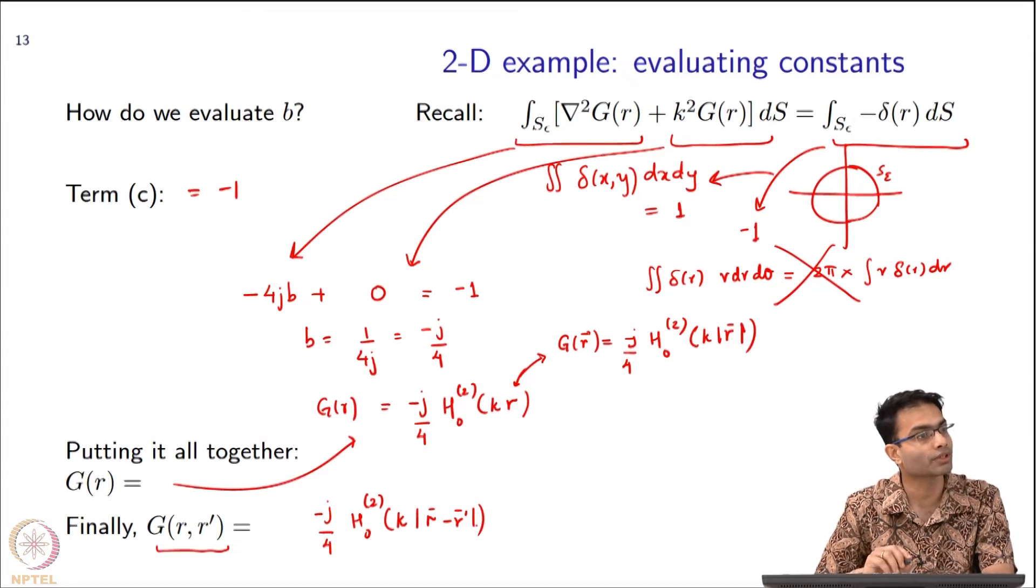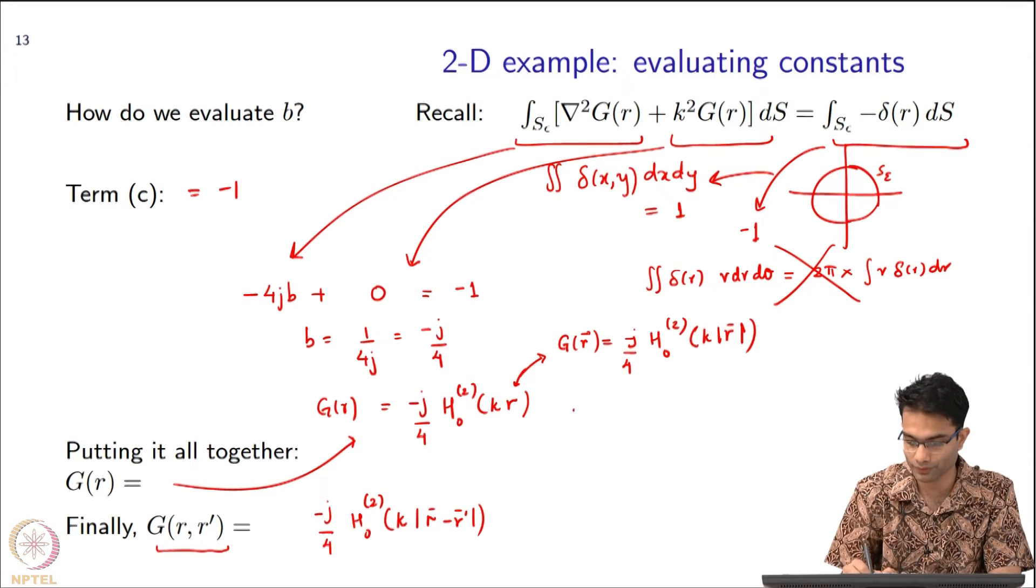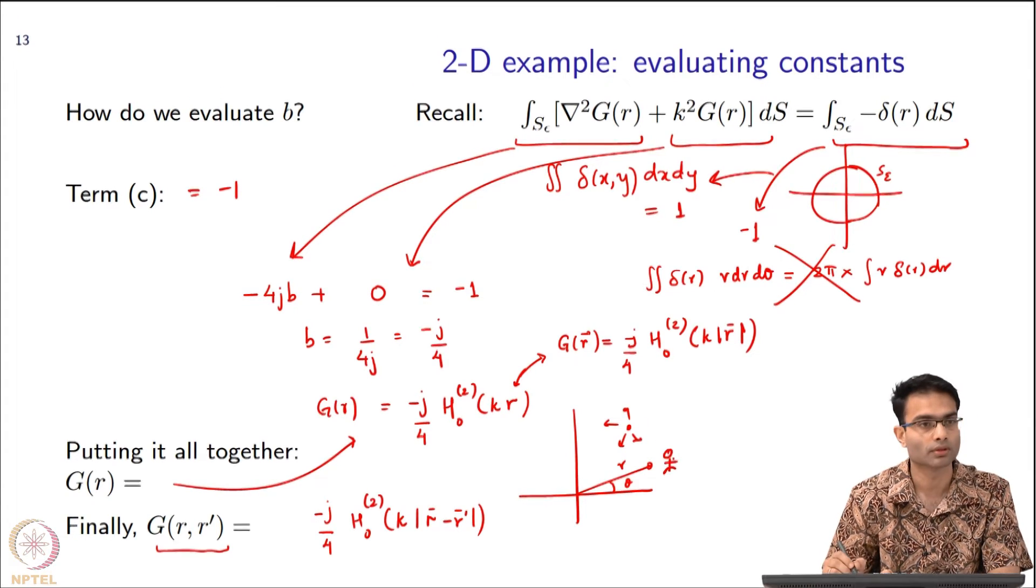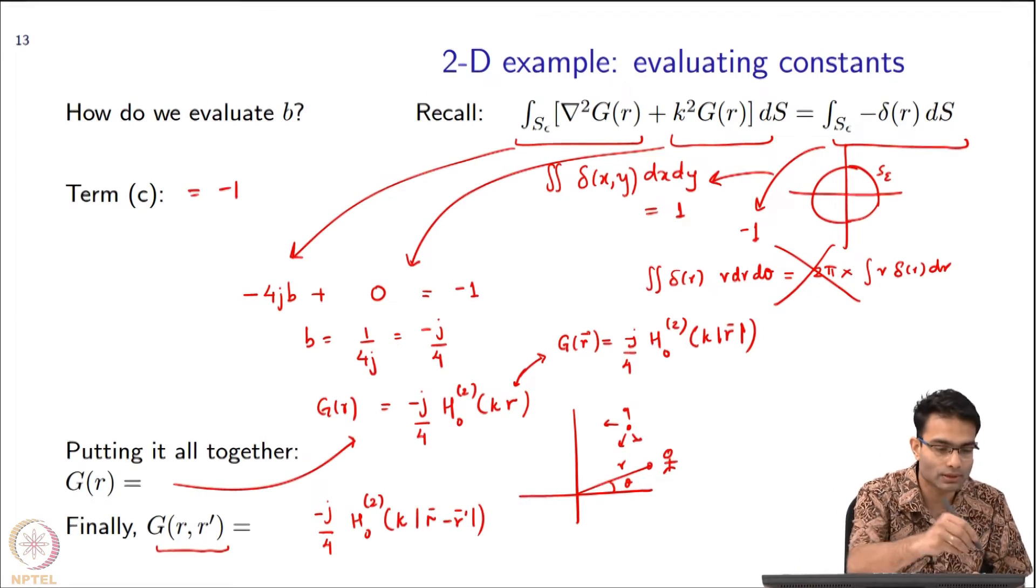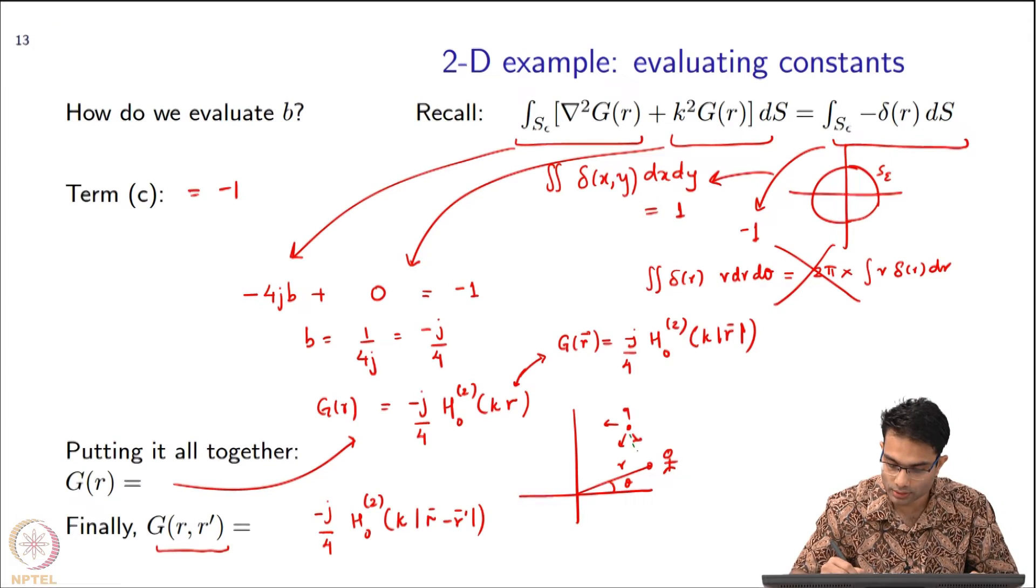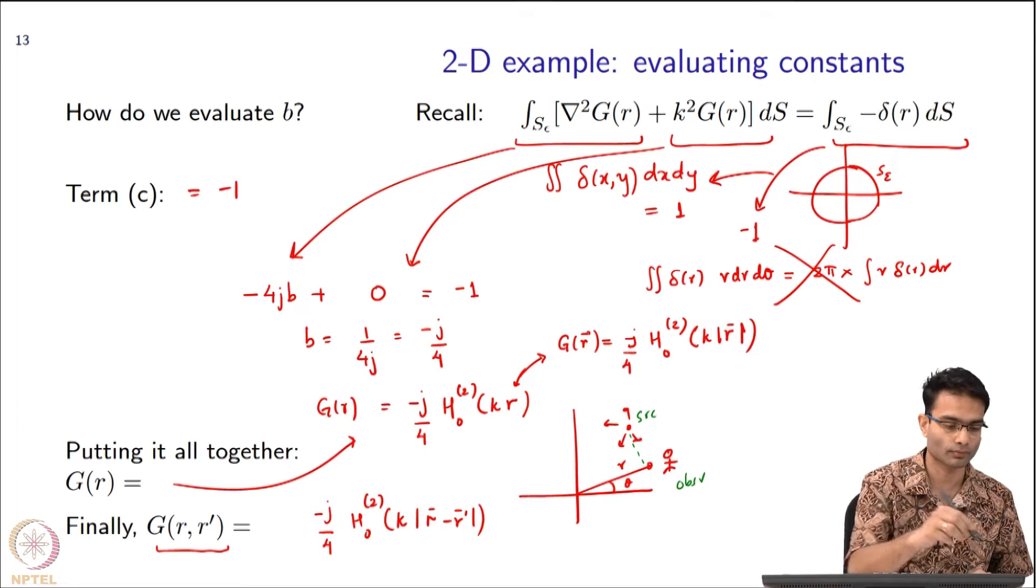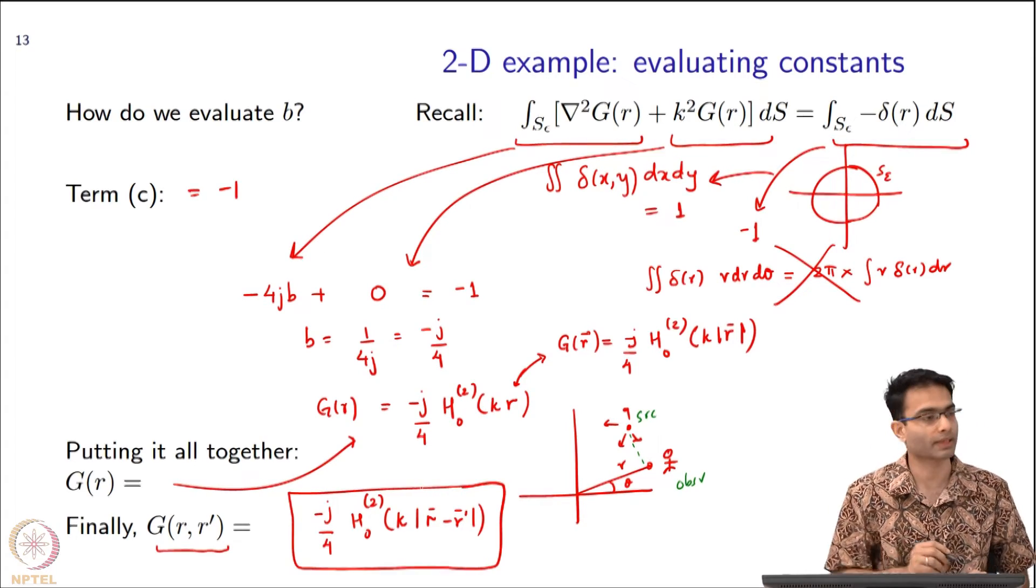Just arguing this physically allows us a lot of simplification. Instead, if you had chosen your location of the delta function to not be the origin and insisted on solving everything, you would have had to keep the θ-dependent terms. If, for example, my delta function is over here and my observer is at (r, θ), then obviously the way this source is emitting, there is a θ dependence for this observer. I would not have been able to remove the θ-dependent terms. But finally, all that matters is the distance between the source and the observer. This is the form of the 2D Green's function that we will use.